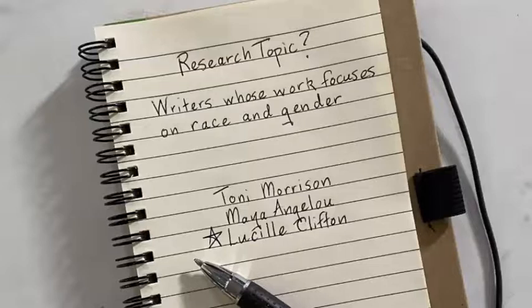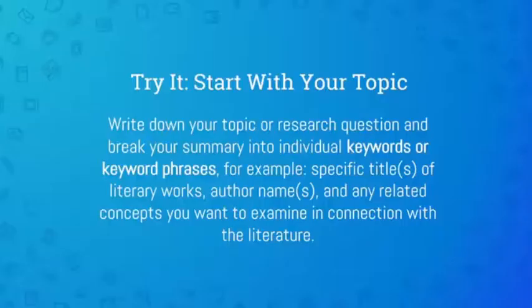Writers could be a keyword, as could poets or authors. Race could be a useful keyword, as could racism and civil rights. Gender is also a useful keyword, as are related terms like gender bias and feminism. When we search in databases, we want to compile lists of these essential keywords for our research topics.